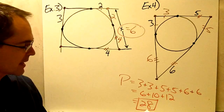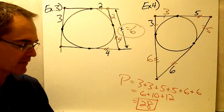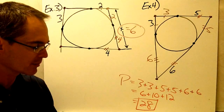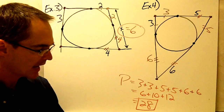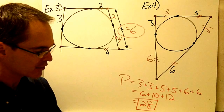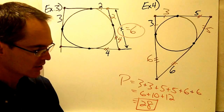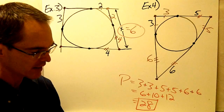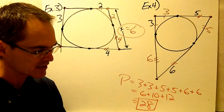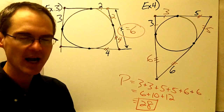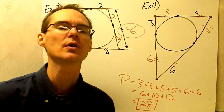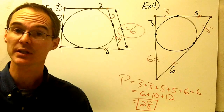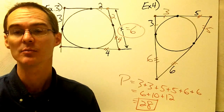And now finally, example number 5. I'm going to leave that one for you to work on, but notice that it's very similar to example number 1. In order to find the value of x, you have to first figure out that other piece of that hypotenuse of the right triangle. I'm going to let you work on that one, and we'll take a look at that in class tomorrow.